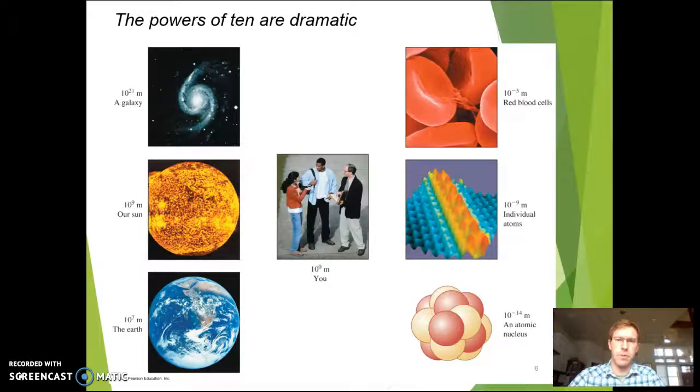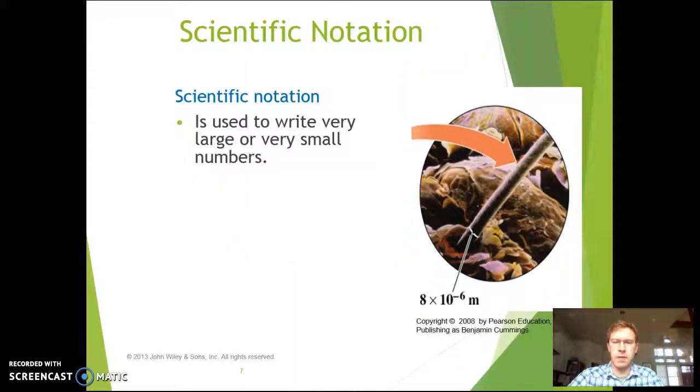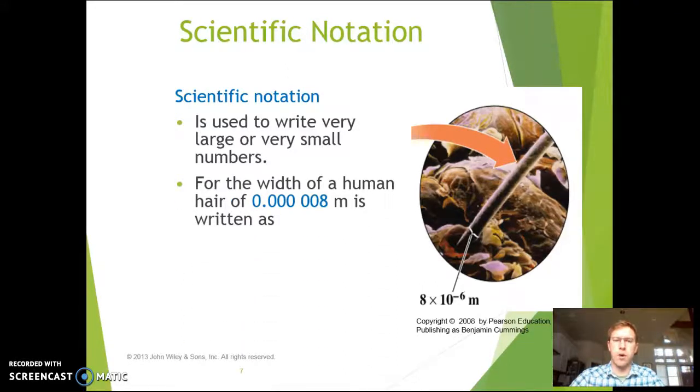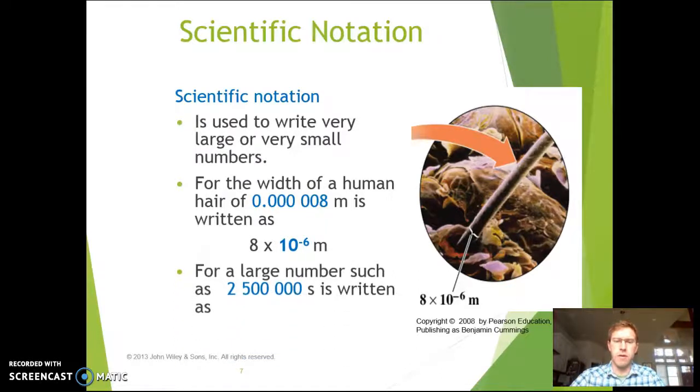So to help us with writing things out that are very large or very small, we will oftentimes be using scientific notation. Scientific notation is writing a number multiplied by a power of 10 to represent the scale and the size of the number, and just to represent the number accurately in a more convenient way. Because we're going to deal with things from the size of a galaxy, way up here, all the way down to the size of the atom, ranging from 10 to the 21st power of meters down to 10 to the negative 14th power of meters. So just to kind of remind you how scientific notation works, scientific notation is used to write either large or small numbers, and it's going to exist or be composed of basically a coefficient,